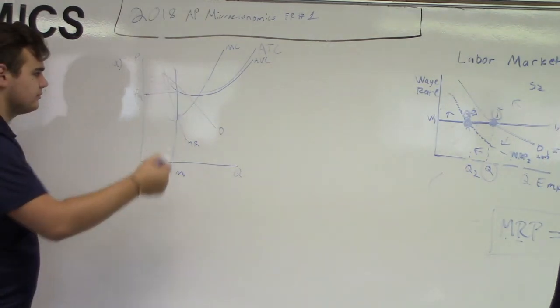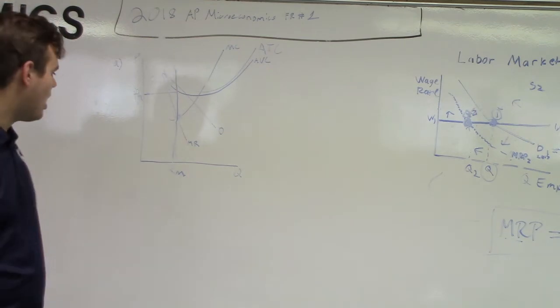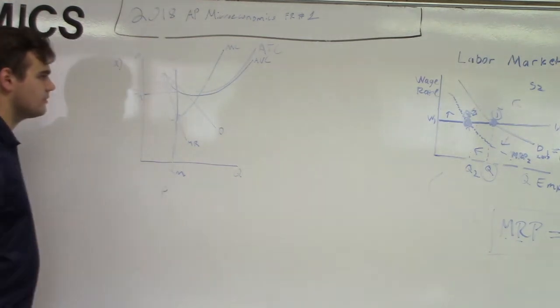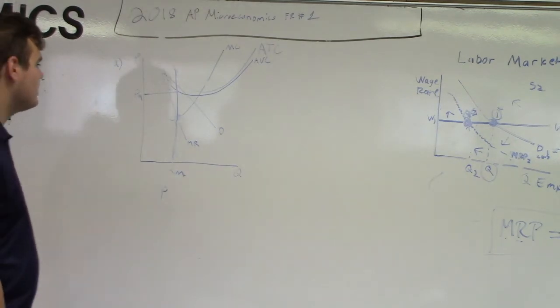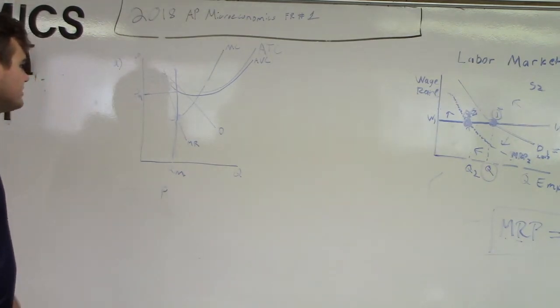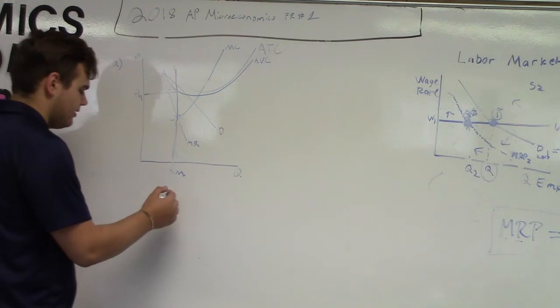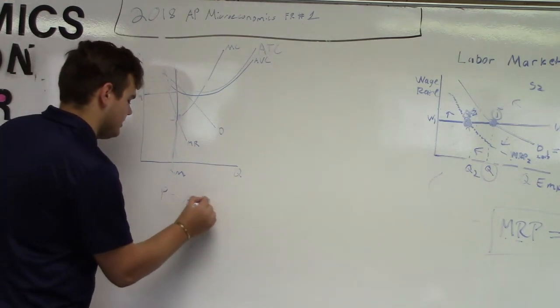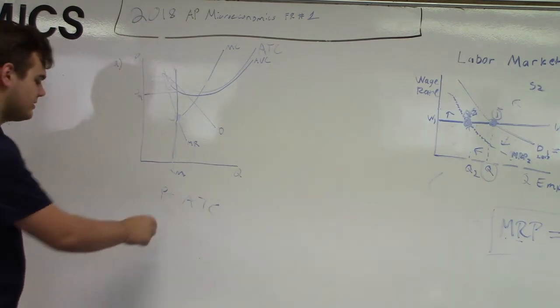And then this area here is going to be where they're making negative economic profit. Could you show the relationship, could you write down on the board where is the price compared to the average total cost in this example? Oh yeah, so in this example, the price is below the average total cost. So P would be less than ATC. Okay, good. Remember guys, price is less than average total cost.